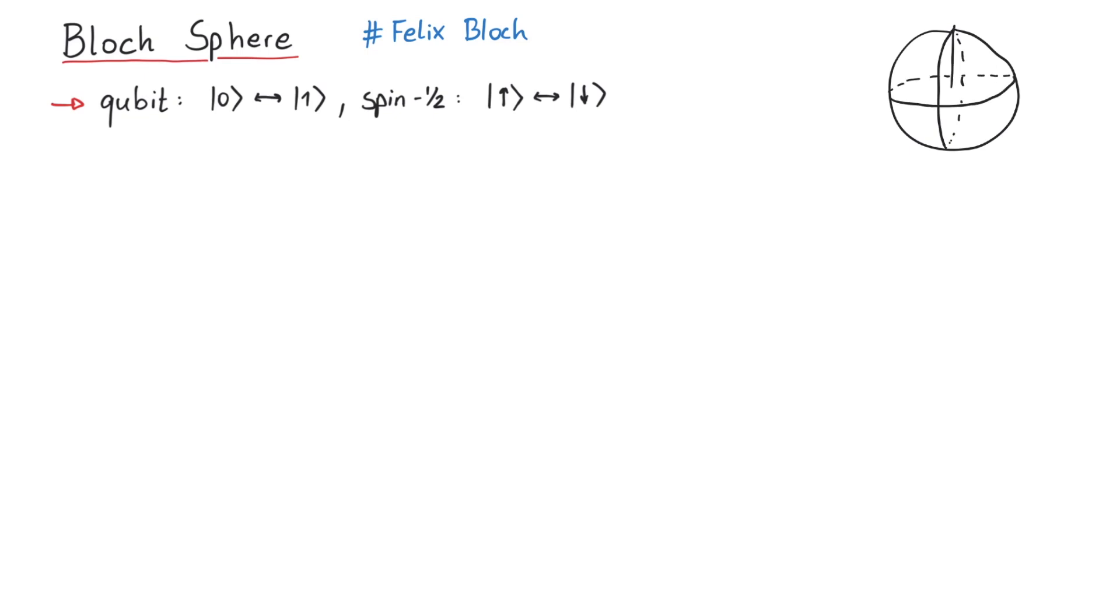These two basis states are usually put at the north and south poles of the Bloch sphere. And any other point on the surface of this sphere corresponds to certain superpositions of 0 and 1, or up and down. Note that this is only true for pure quantum states, whereas mixed states lie within the Bloch sphere.